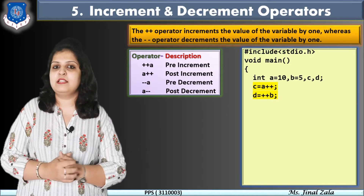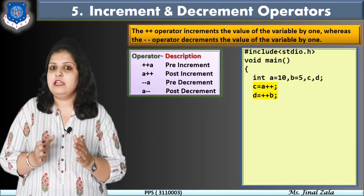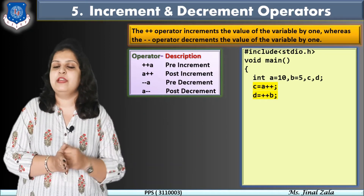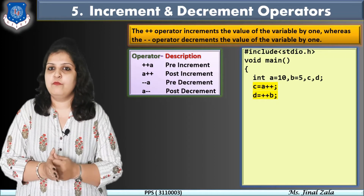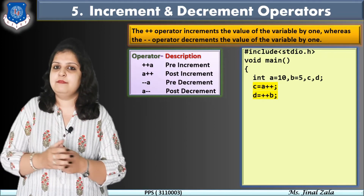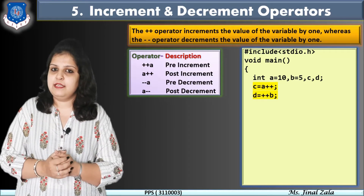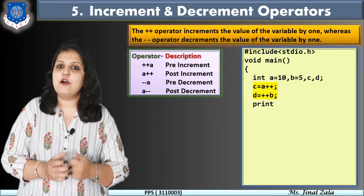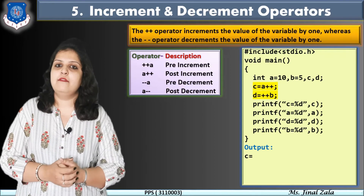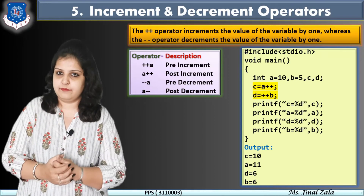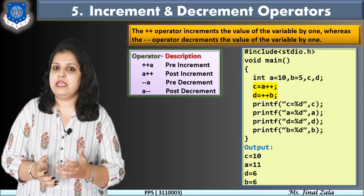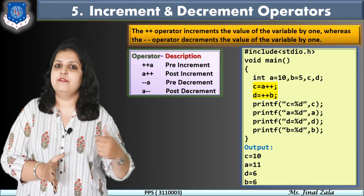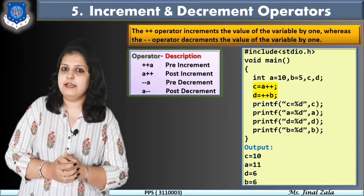For D = ++B: this is pre-increment, so the value of B is first increased — 5 becomes 6 — and then the incremented value 6 is assigned to D. So the output is: C = 10, A = 11, D = 6, B = 6. In this way we use increment and decrement operators. Their main use will be in the loop chapter, which we will see in the next module.